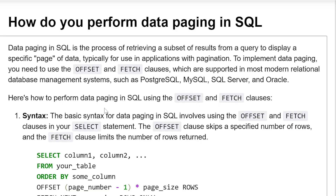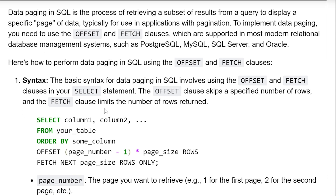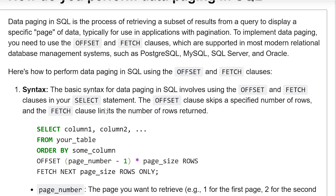Here's how to perform data paging in SQL using an OFFSET and FETCH clause syntax. The basic syntax involves using OFFSET and FETCH clauses in your SELECT statement. The OFFSET clause skips a specific number of rows, and the FETCH clause limits the number of rows returned.